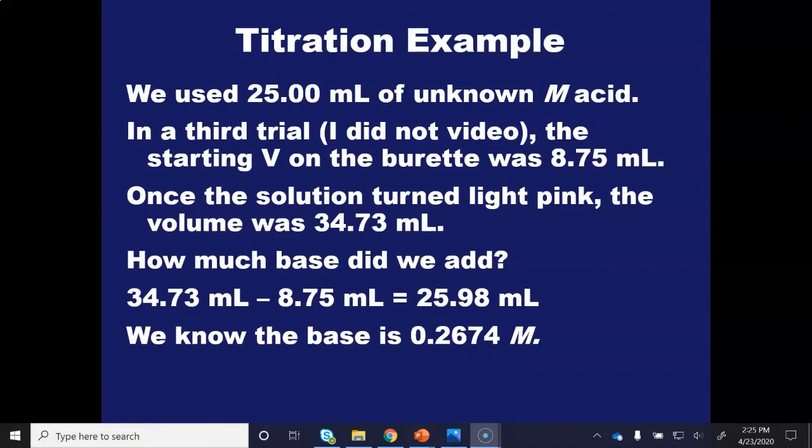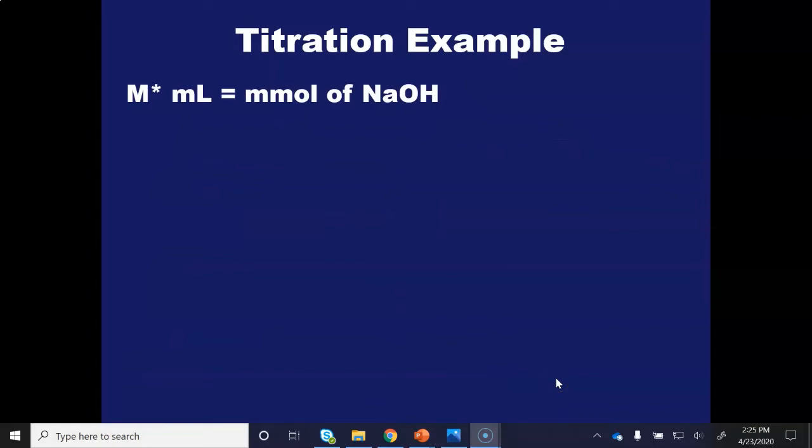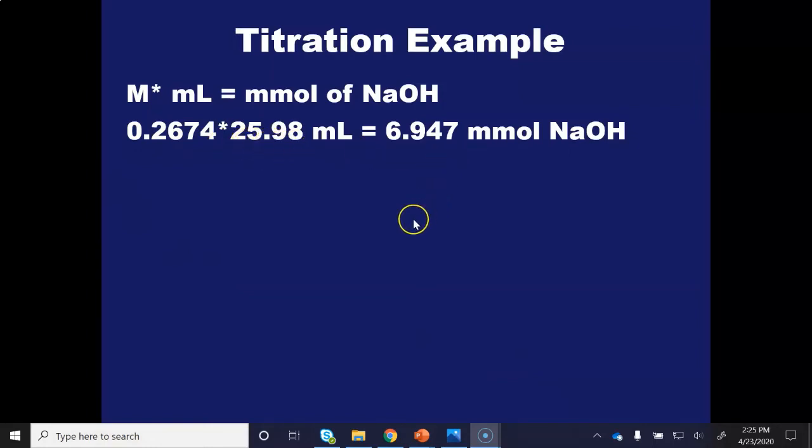I know that molarity times milliliters will get me a number of millimoles, so I do have the molarity and the milliliters of base, so I can find the millimoles of base pretty simply. Molarity times milliliters is millimoles. So I take my molarity, 0.2674 molar, multiply it by 25.98 milliliters, and I get that that volume of base contained 6.947 millimoles of sodium hydroxide.